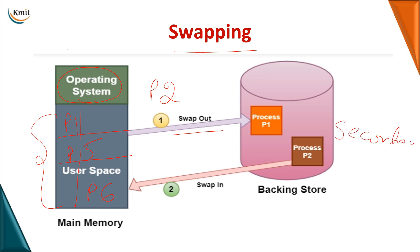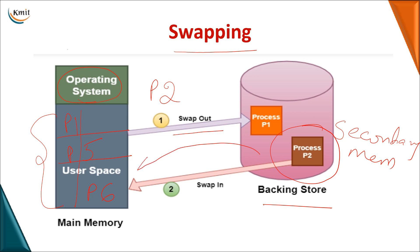The secondary memory used during swapping is also called a backing store. When you want to execute a process again, you bring it back from secondary memory to main memory — this is called swap in. So, moving out a process is swap out and bringing a process in from secondary memory is swap in.